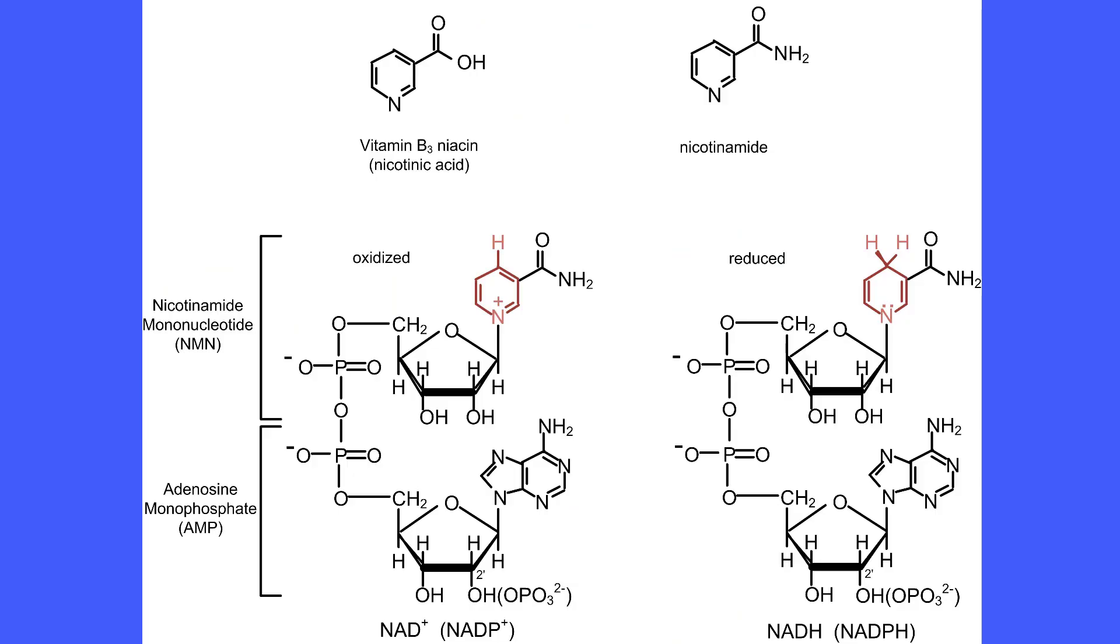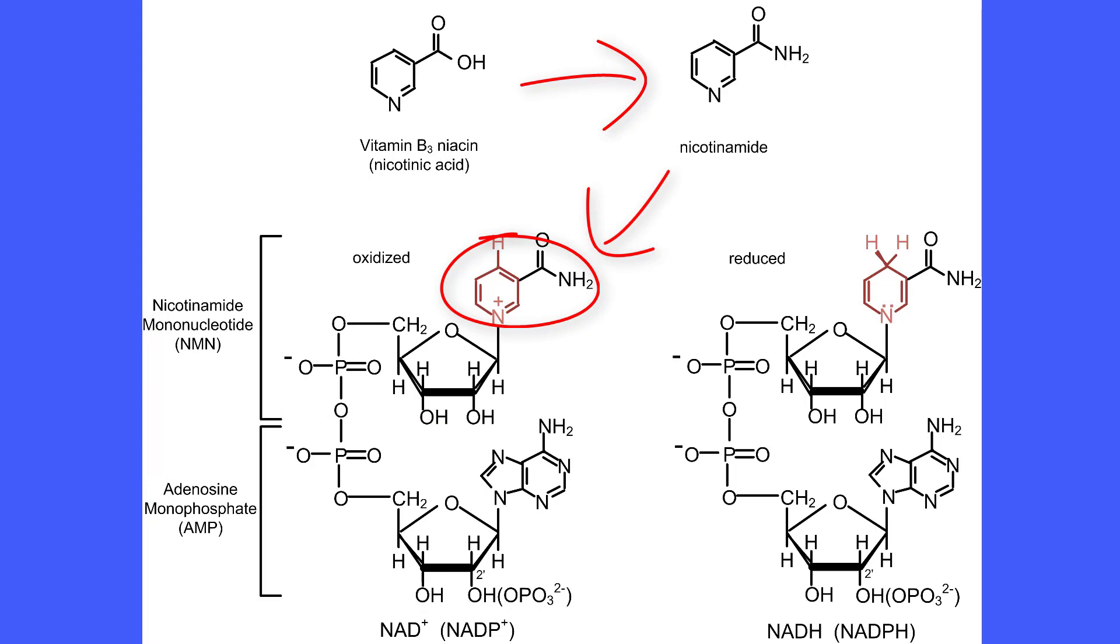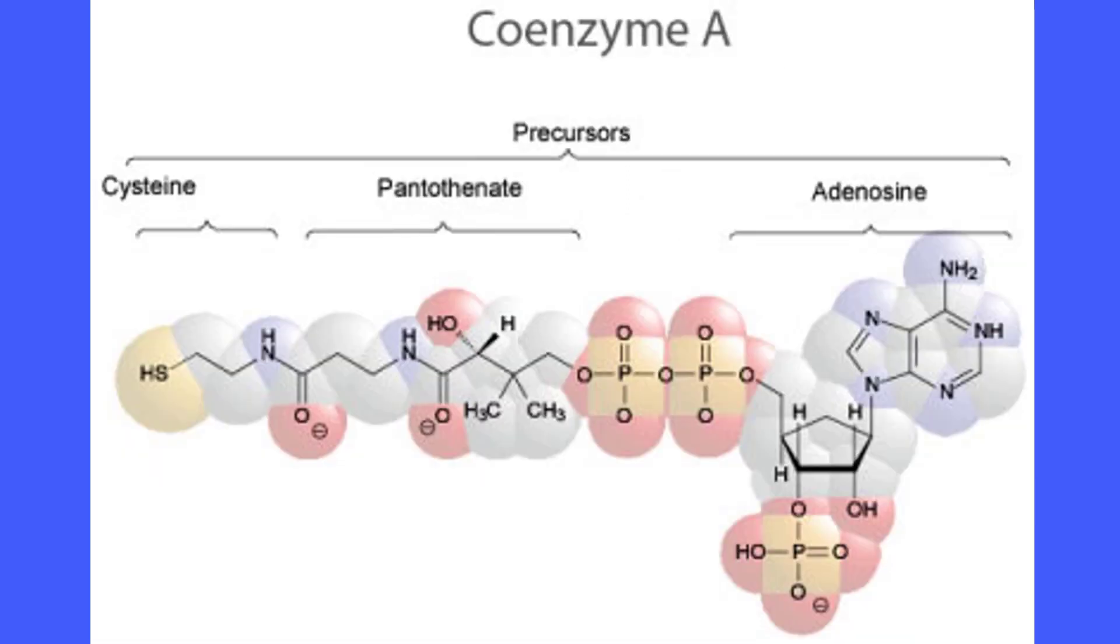NAD is another nucleotide coenzyme. If we start with AMP and add a second nucleotide made with the vitamin B3 niacin as the nitrogenous base, we get NAD. If we start with ADP, add a phosphate, add pantothenic acid (which is vitamin B5) and an amino acid cysteine, we get coenzyme A.